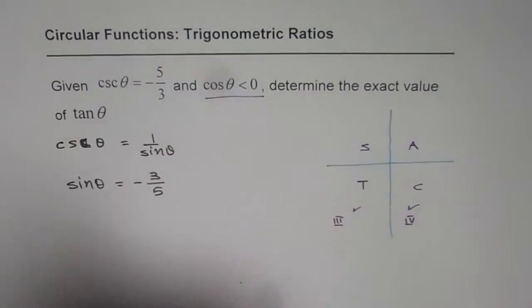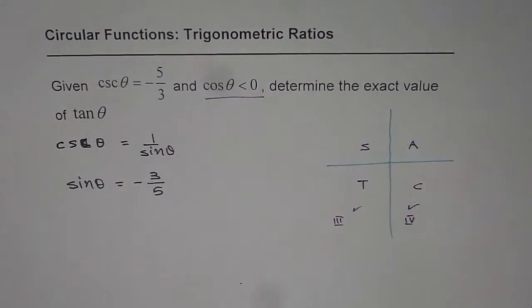Now the second condition is that cosine theta is less than 0. Now in quadrant 4, cosine theta is positive, not less than 0. It is negative only in third quadrant.